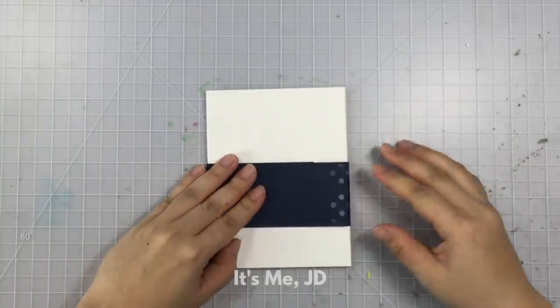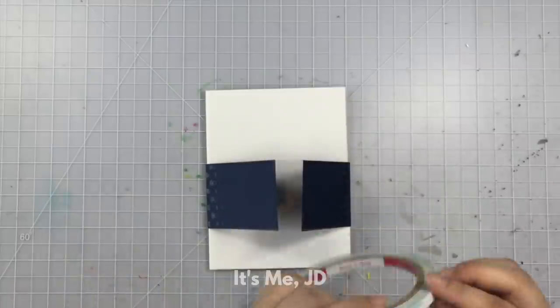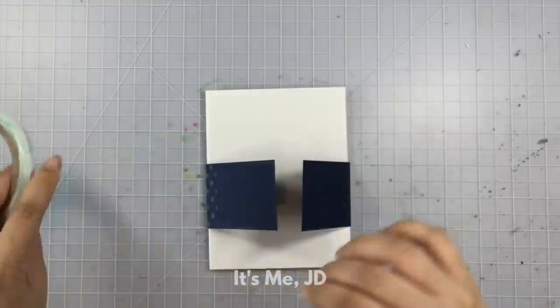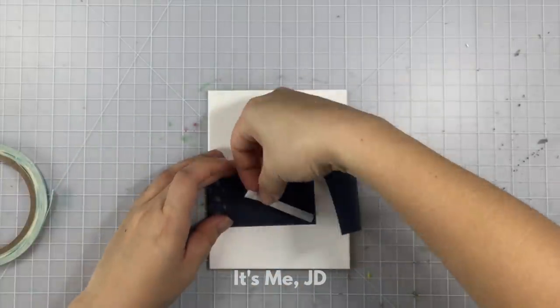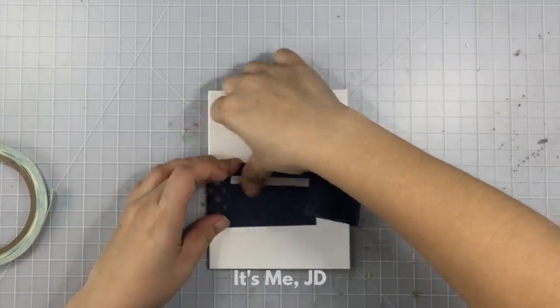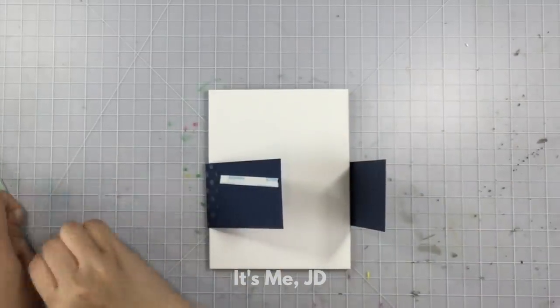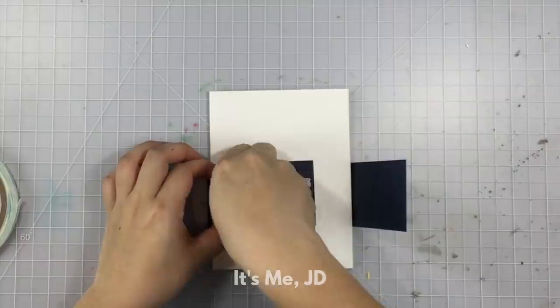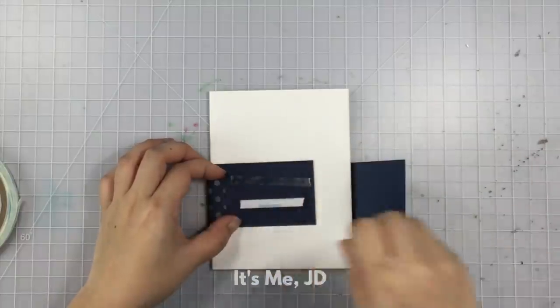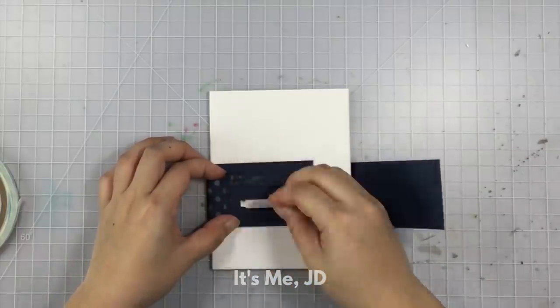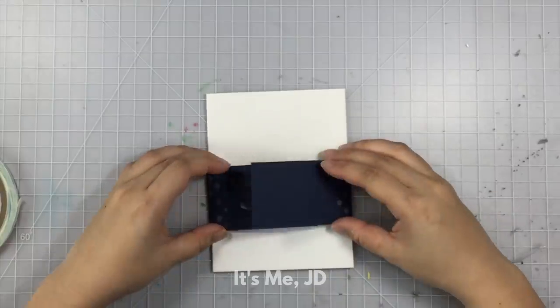I'm just centering the stencil portion of the belly band across my card so it's centered and then I'll use some really strong double-sided adhesive to connect the belly band and you can use any length you want you just want to make sure that it overlaps your card and you're not too short or there's not too much excess hanging over.